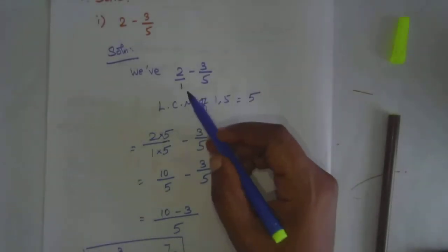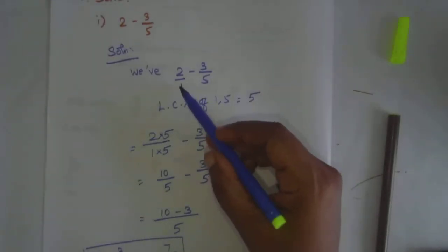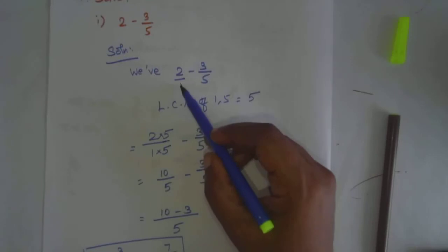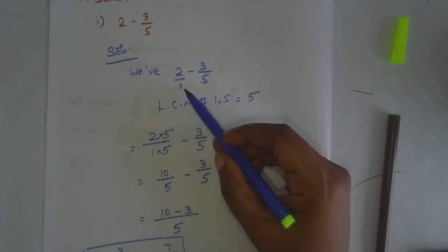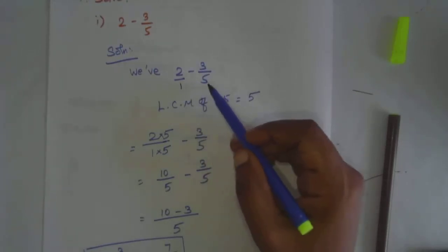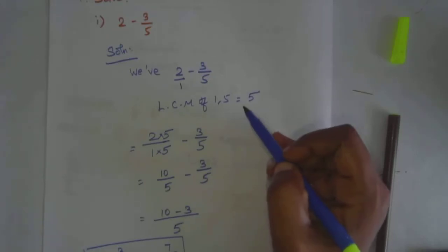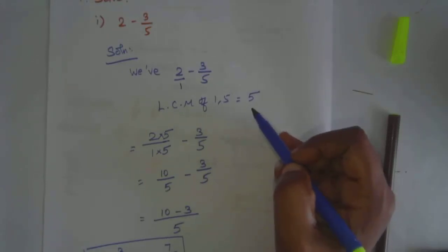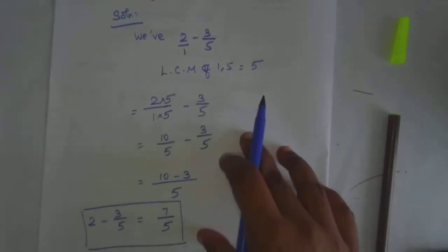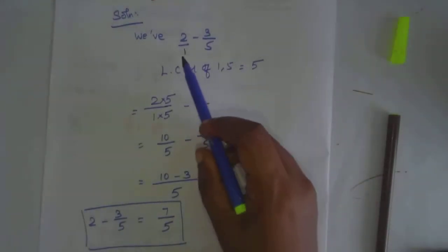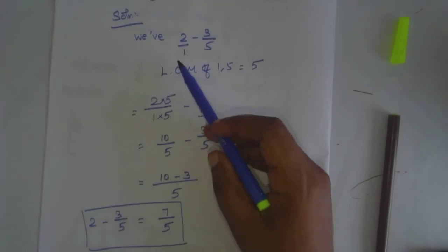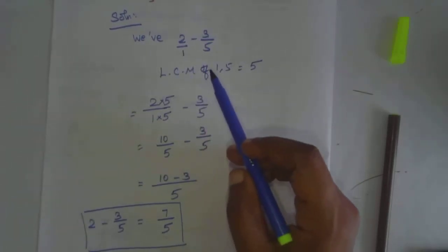So the given question is solved. Fraction 1 is a whole number. The whole number has denominator 1. LCM of 1 and 5 is equal to 5. So LCM of 5 is equal to 5.